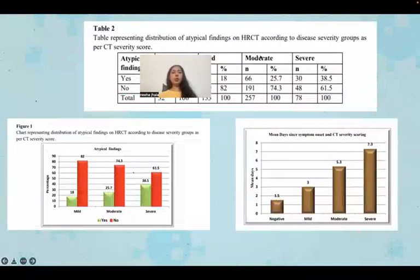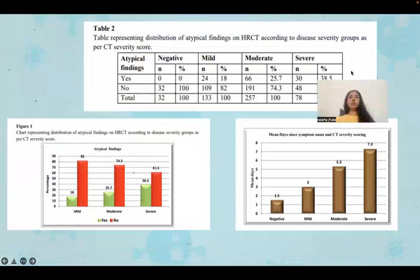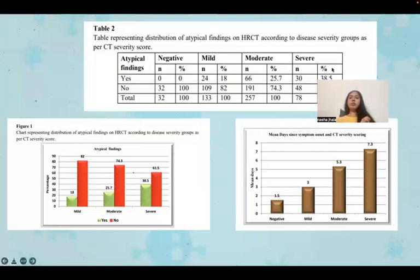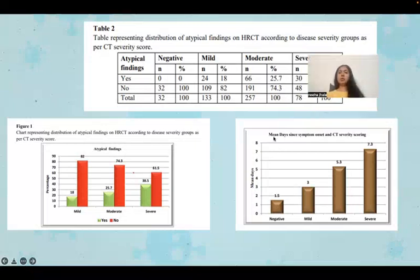Table two shows the distribution of atypical findings on HRCT according to the disease severity groups as per CT severity score. Atypical findings were present in 38.5% of people with severe disease. The figure also shows the mean days since symptom onset and CT severity scoring, which was highest for severely diseased people at 7.3.